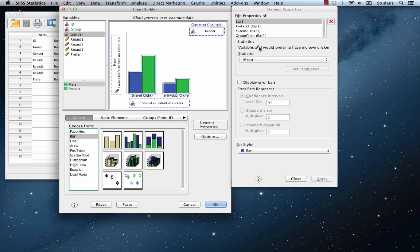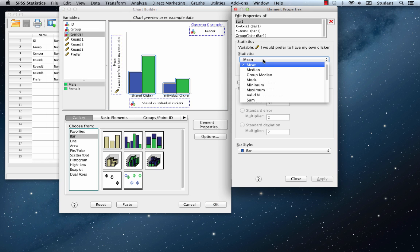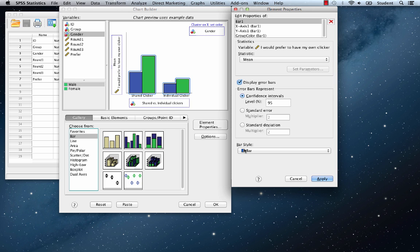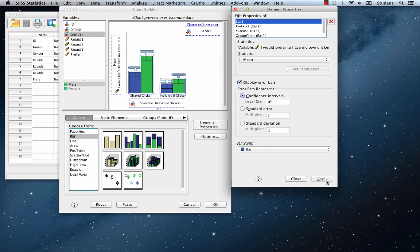In the element properties window, our statistic is mean. That's what we want. Let's display the error bars. Confidence interval is 95% and the bar style is set to bar. Click apply and OK.